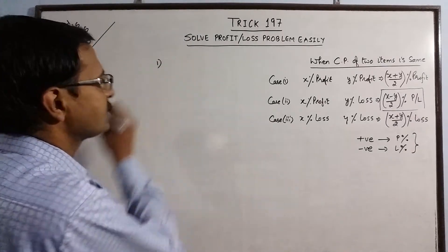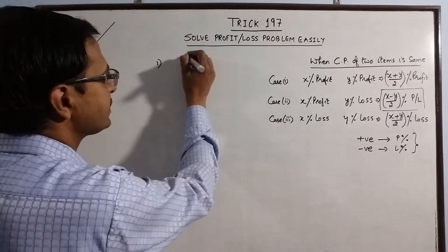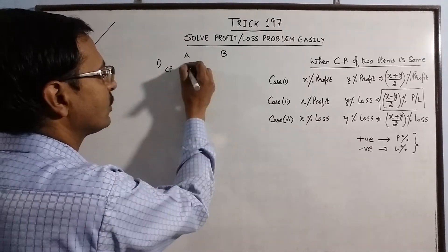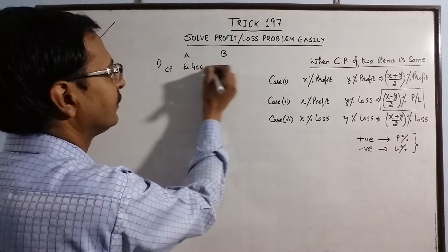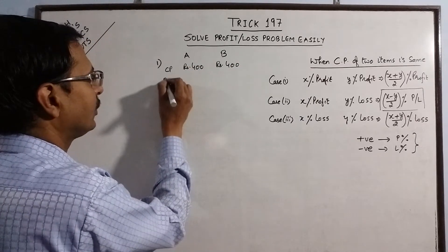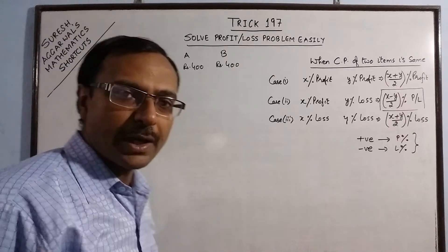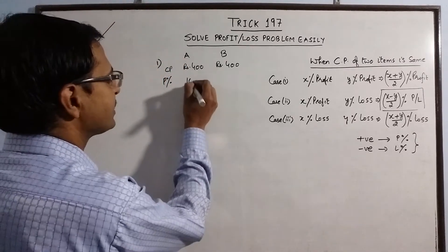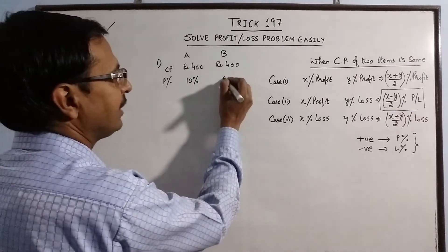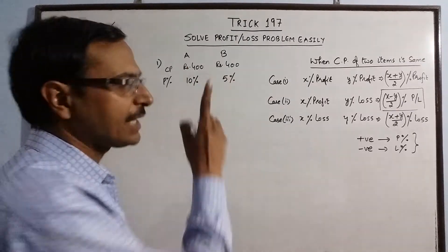So in the first question, we have two items A and B and their cost price is given, say Rs. 400 each. Now, each item is sold at a particular profit, say 10% profit on the first item and 5% profit on the second item.